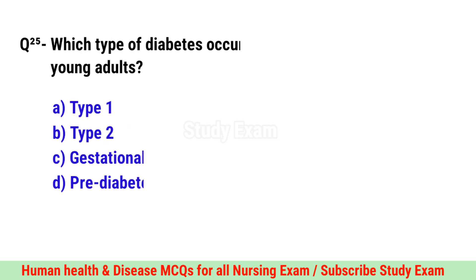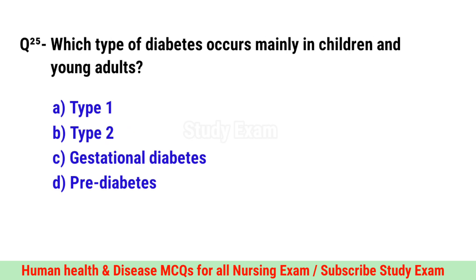Question No. 25. Which type of diabetes occurs mainly in children and young adults? Correct option is A. Type 1.